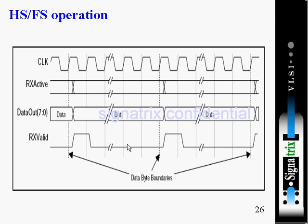Now we will see some timing diagrams. For high speed and full speed operations during receive time, this is the clock. Rx active signal is high. Rx active signal will only change when there is a change in Rx valid — when there is a change from zero to high in Rx valid. During that time Rx active changes.